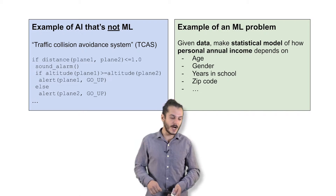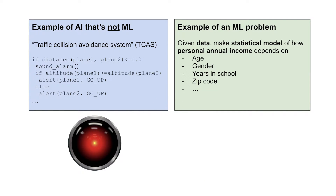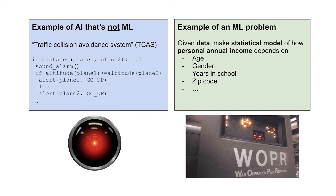For a more cinematic example of the difference between AI and machine learning, you can think of HAL 9000 from 2001: A Space Odyssey, which was essentially programmed to carry out a single-minded task — a classic AI example. Compare that to the computer in the 1980s classic War Games, which was trained to learn to play global thermonuclear war and then could learn things like tic-tac-toe — an example of a machine learning AI.